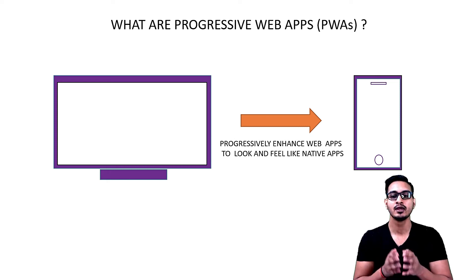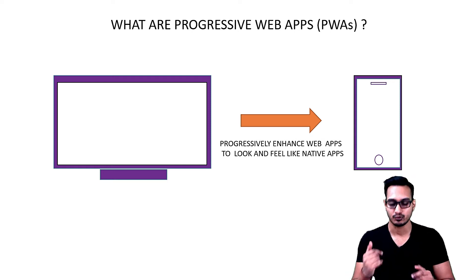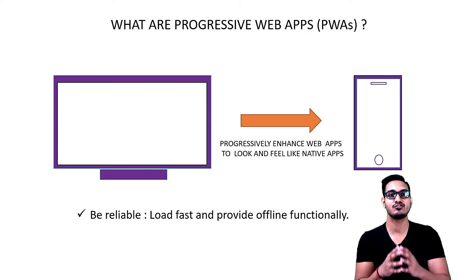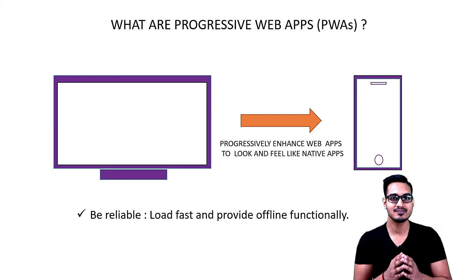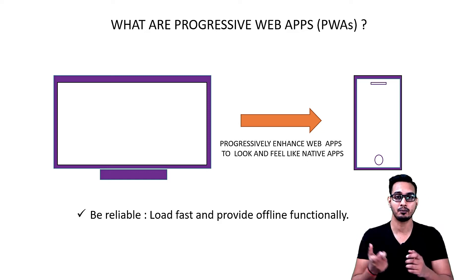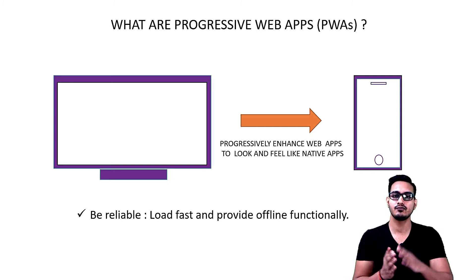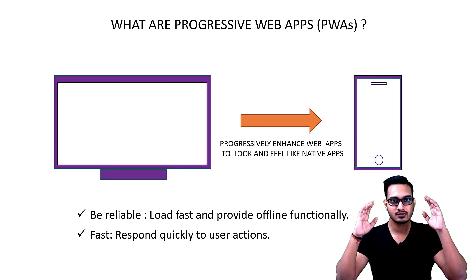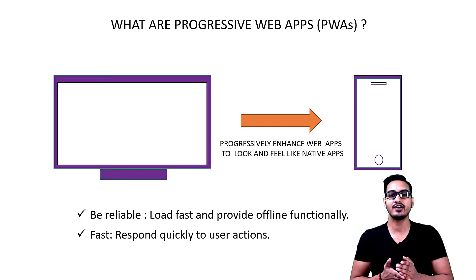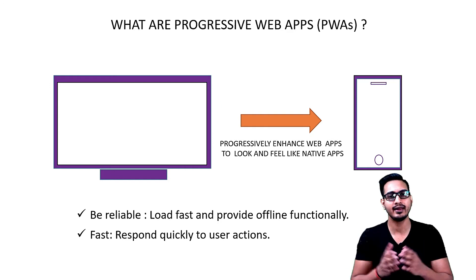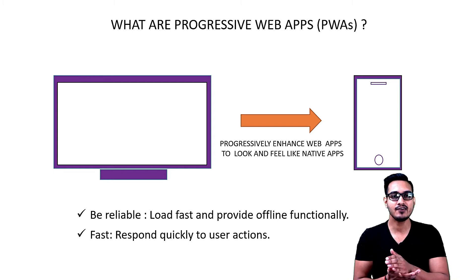The advantages of using a PWA: first, it loads pretty fast, and the best part is offline functionality — you can load pages and some functionality in offline mode, similar to a mobile app. It is not published on app stores like the App Store or Google Play Store; it is available on the internet as a website — you just hit the URL and you get it.